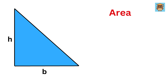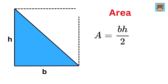When we think about the area of a triangle, especially a right triangle, the calculation is one of the simplest examples of geometry. It is simply base times height divided by 2. This formula works because a triangle is essentially half of a rectangle.